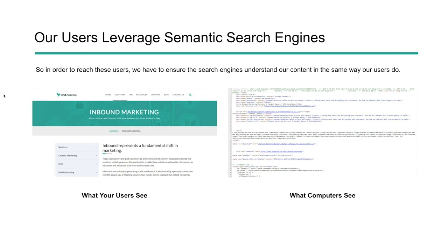If we look at a traditional website page, this is what your user sees — you'll see some navigation, maybe a headline, some breadcrumbs, maybe some links to other pages and content. If we look at what the computer is actually crawling, it looks like this.